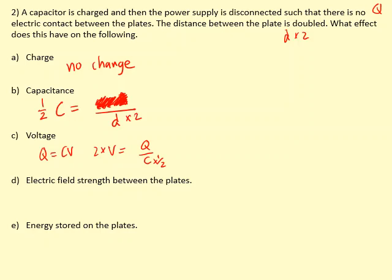For electric field strength between the plates, we use E = V / d. From the previous part, voltage is multiplied by two, and the question tells us distance is also multiplied by two. The two factors cancel out, so the electric field strength has no change.